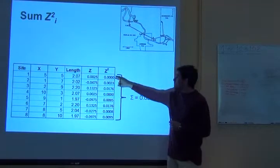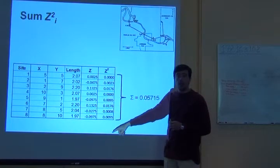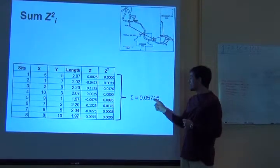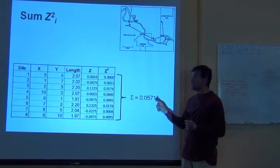Now I'm going to sum everything that is squared. This is just a sum. Excel can help with that too. And that gives me this final number here, 0.05715.